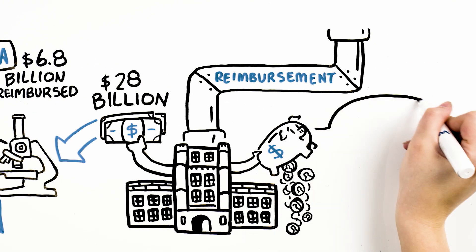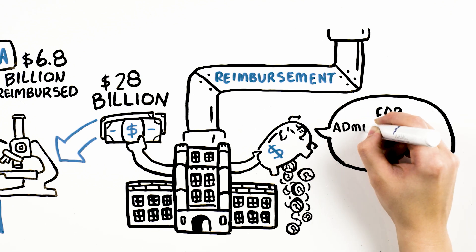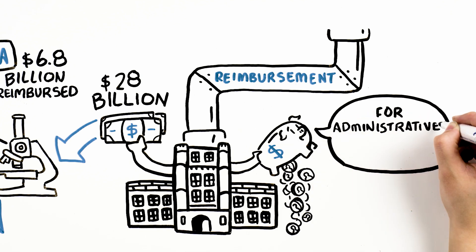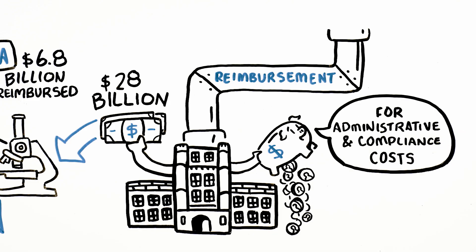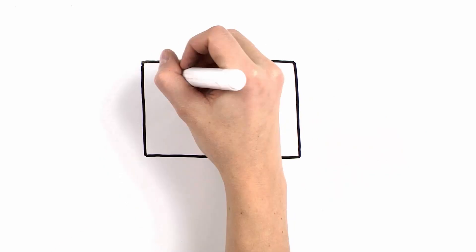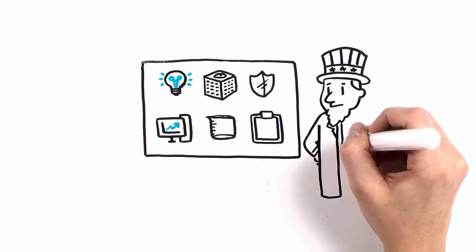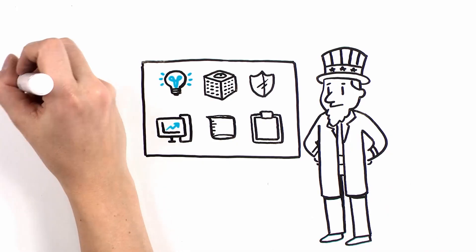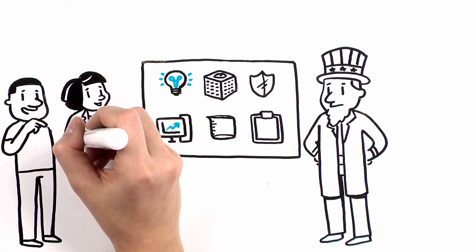In fact, unlike other research performers that are fully reimbursed for these costs, universities are strictly limited in the amount they can recover from the federal government to pay for administrative and compliance costs associated with the government research they conduct. This is due in part to an exacting F and A cost rate negotiation process with the government that requires institutions to scrupulously identify and defend costs eligible for reimbursement.